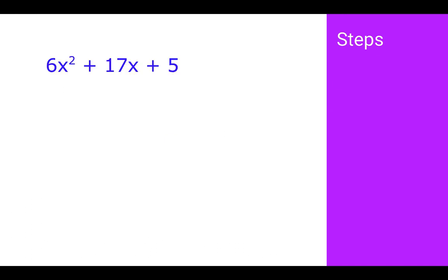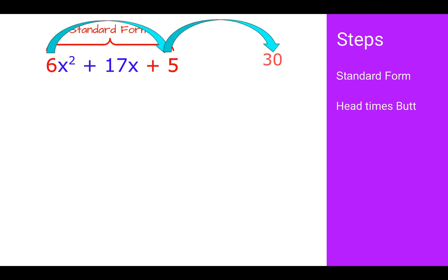We're going to look at another one, 6x squared plus 17x plus 5. If you notice, this is in standard form, so we are ready to move on. If we do head times butt, instead of a 1, I have 6 times 5, which is 30.